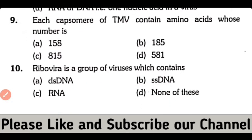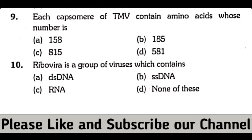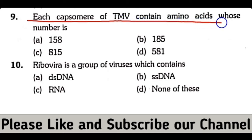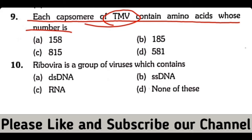Question number 9. Each capsomer of tobacco mosaic virus contains amino acids whose number is — TMV کے capsomer کے اندر کتنے amino acids ہیں. Correct option A: TMV کے capsomer کے اندر total 158 amino acids present ہوتے ہیں.